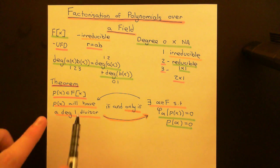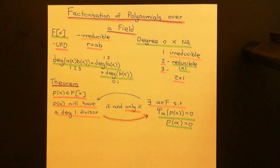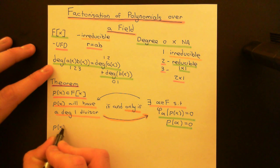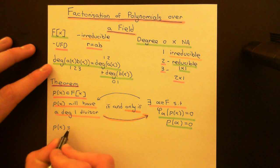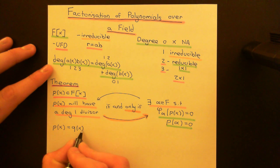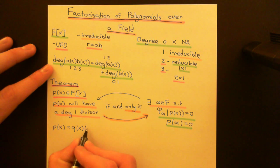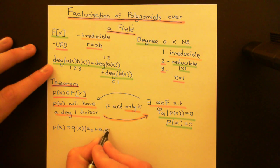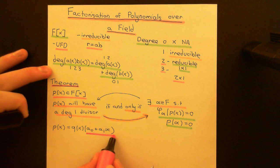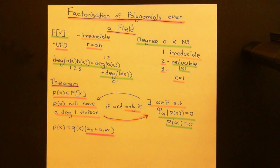Let's start with the assumption that we do indeed have a degree 1 divisor. So let's say our polynomial P of X can therefore be written as some polynomial Q of X times the degree 1 polynomial A0 plus A1 times X. So here is my degree 1 polynomial: A0 plus A1 times X.